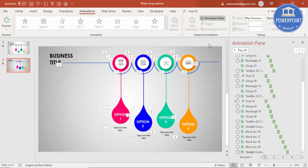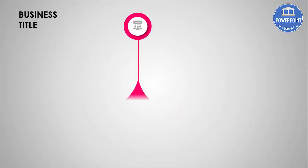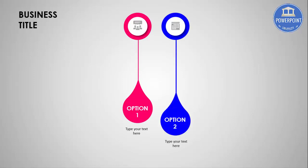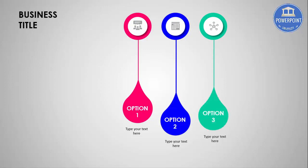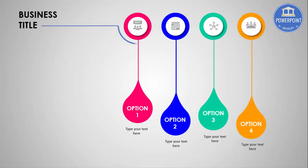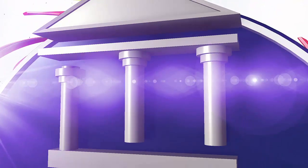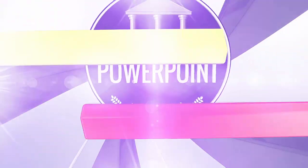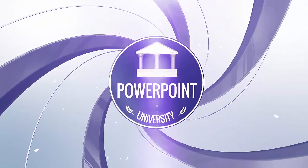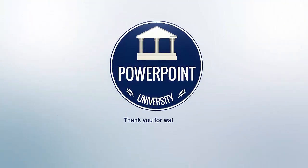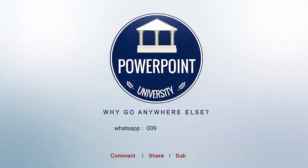Let's see how it looks in slideshow. When I click the first drop comes, then click — the second drop, the third drop, and the last fourth drop. After that the line and decorative elements appear. That's it from me, friends. Thank you for watching my YouTube channel — don't forget to subscribe to PowerPoint University. See you soon with more interesting stuff, till then goodbye.